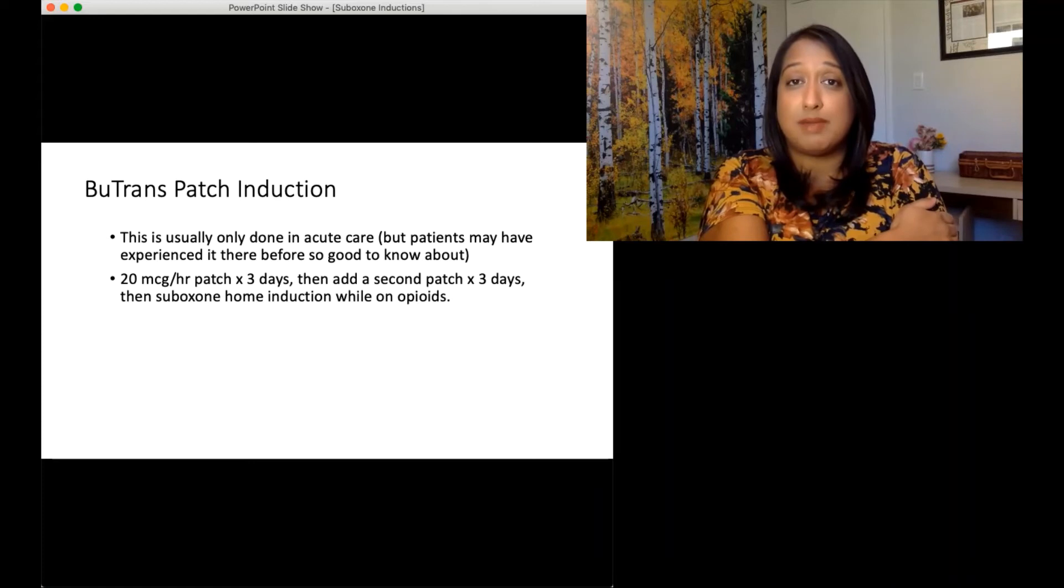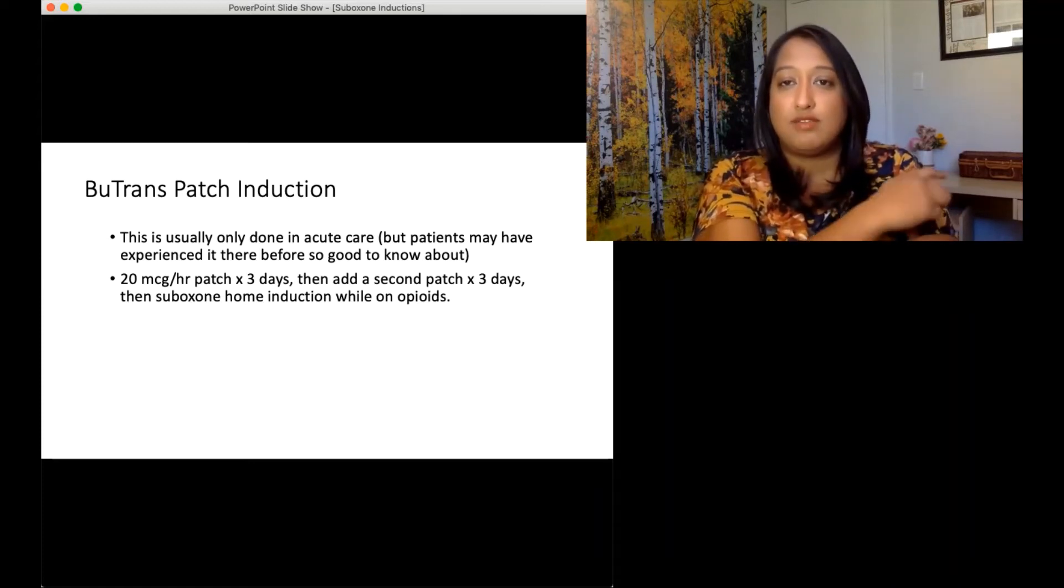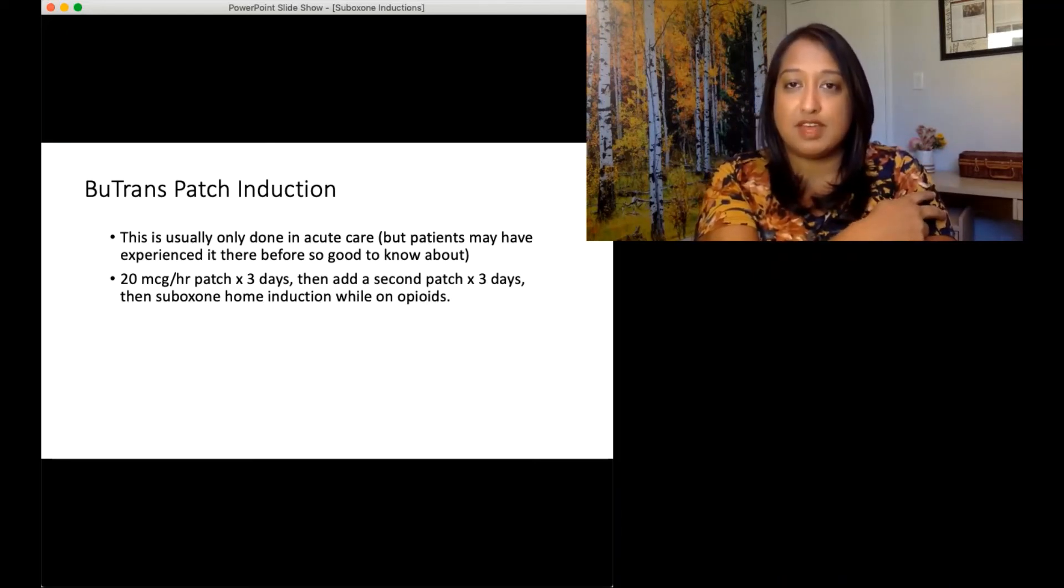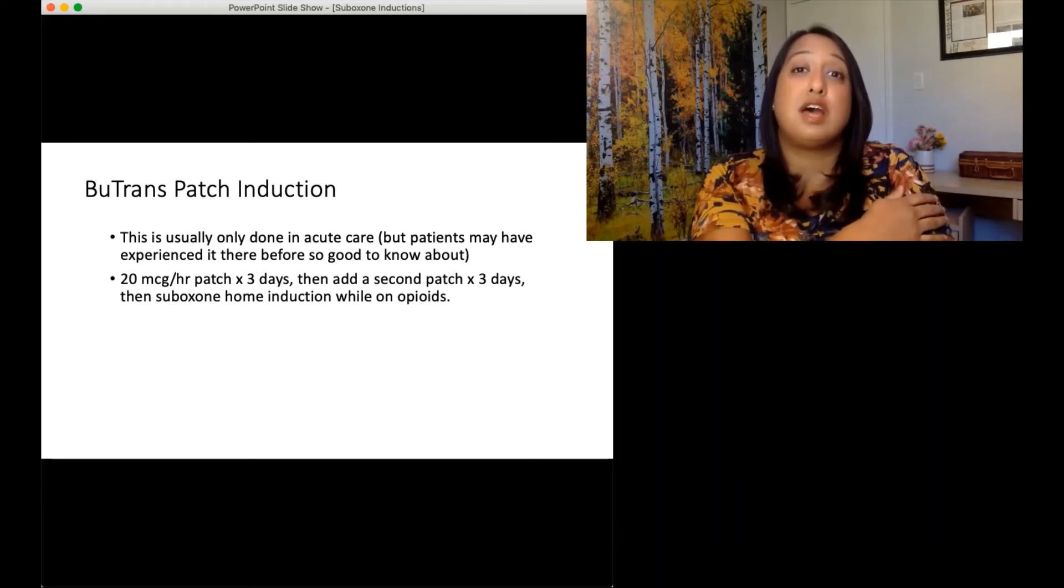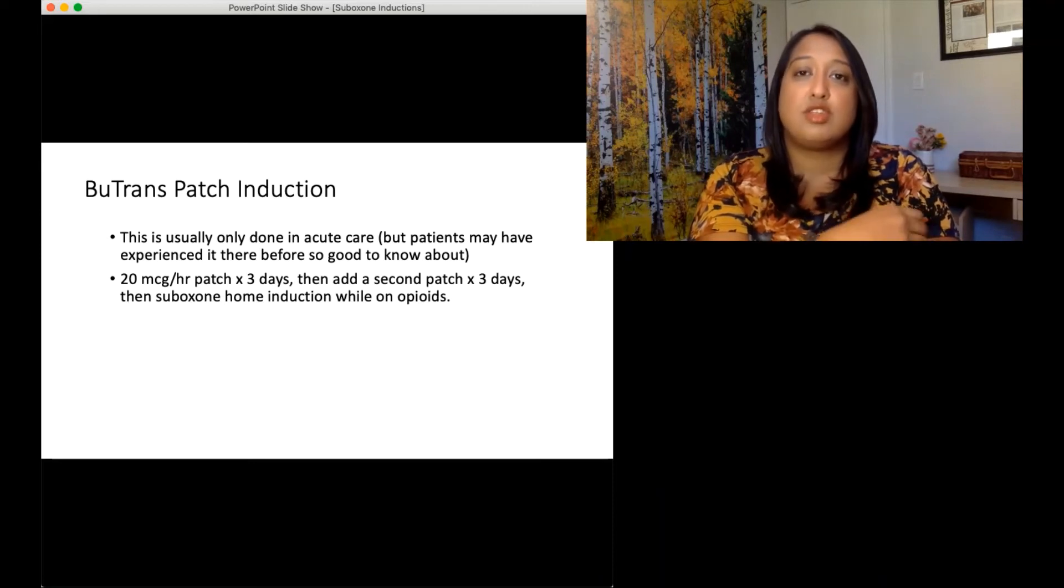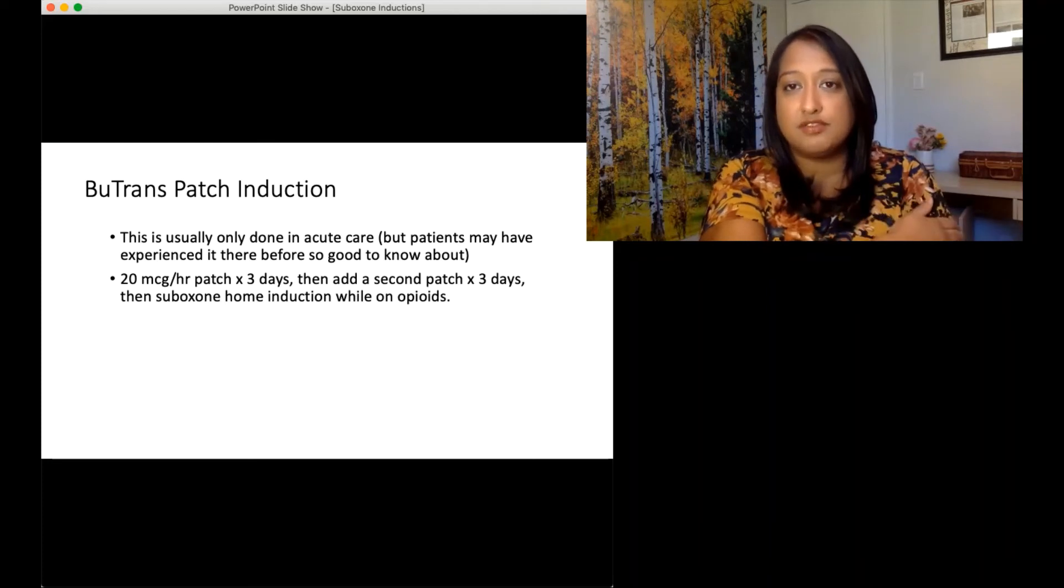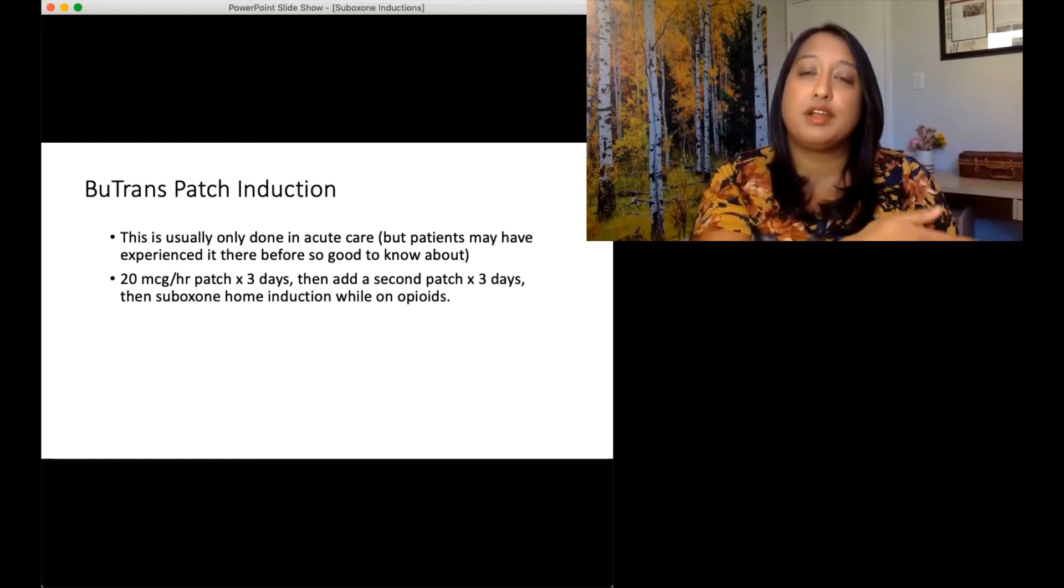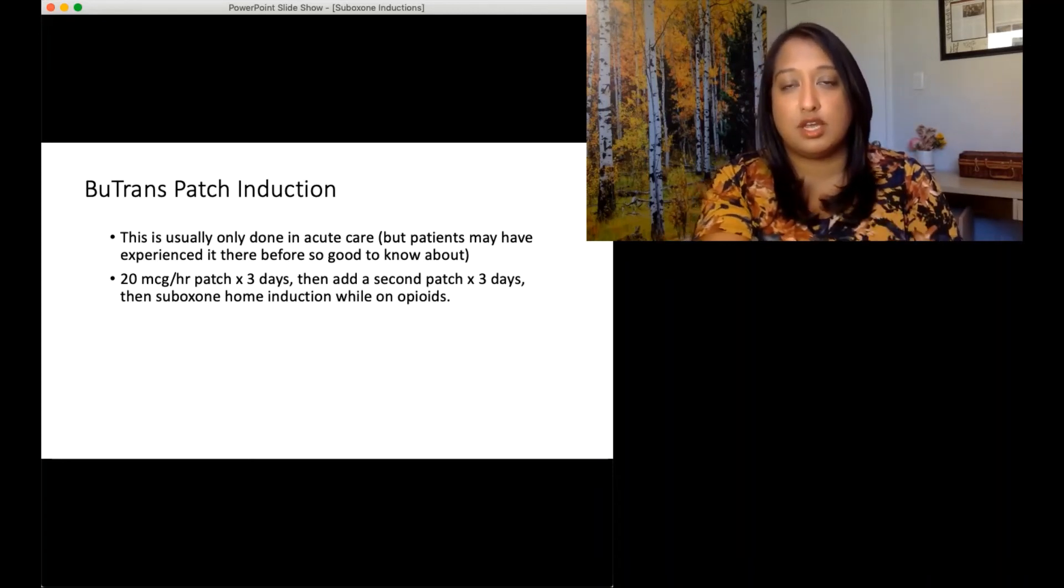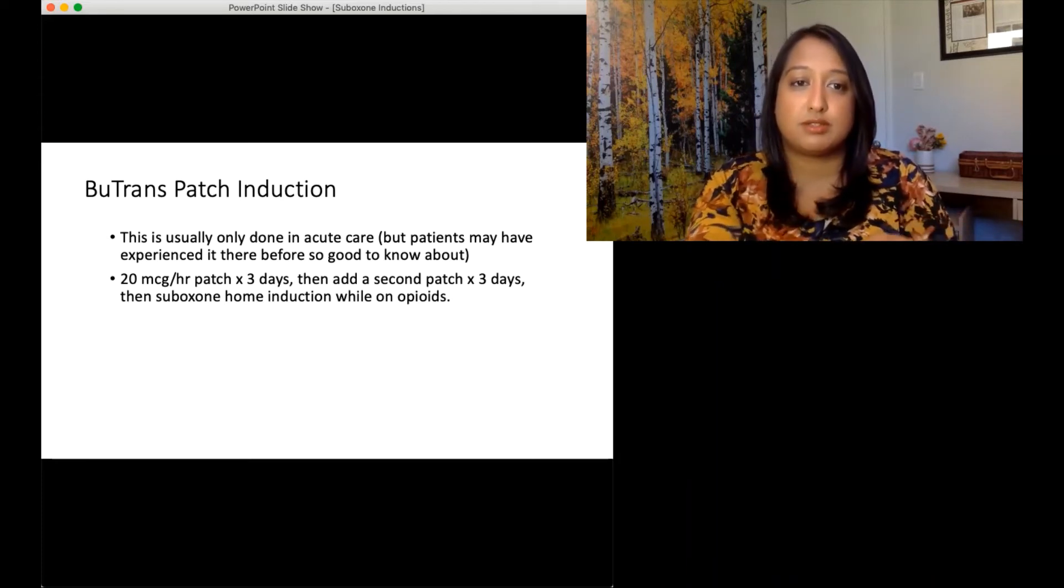So the idea is you put on a 20 microgram per hour patch for the first three days. And after three days, you add a second 20 microgram per hour patch. And then you have those two patches on. So then after day six from the first one, so three days after you add the second one, you can then treat the patient as though they are on two milligrams of Suboxone. So then from there, you can just increase their dose of Suboxone. The patch is another form of a micro induction. So they are on other forms of opioids all the way through up until you start increasing the dose.